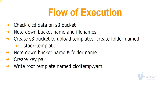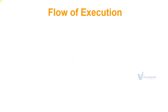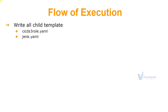We're going to write a root template named CICDtemp.yml — you can choose a different name. This will be the main template that calls the child templates, making it a nested stack. The first child template is CICD-S3-role.yml, which creates an S3 role that will be attached to our EC2 instances. Then we'll write Jenkins.yml, which sets up the Jenkins service on an EC2 instance and downloads the backup from the S3 bucket — for which we need the S3 role. The idea is to run everything from the root template as a nested stack.